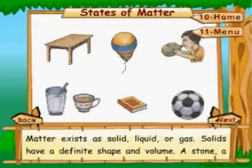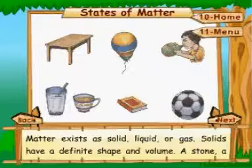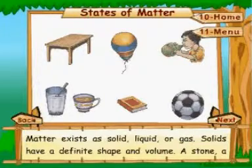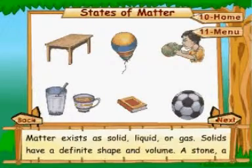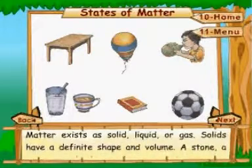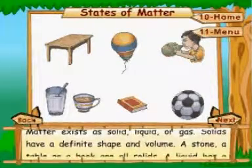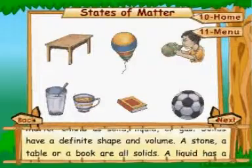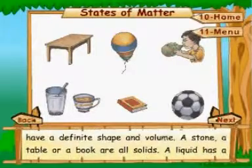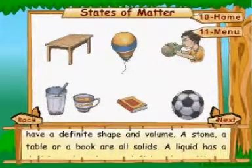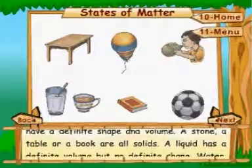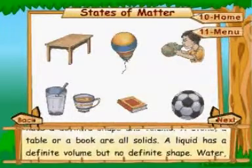States of Matter. Matter exists as solid, liquid, or gas. Solids have a definite shape and volume. A stone, a table, or a book are all solids.